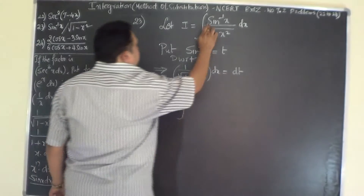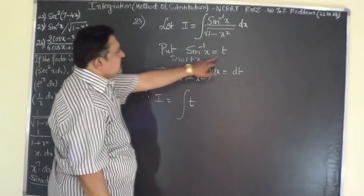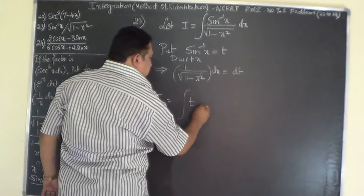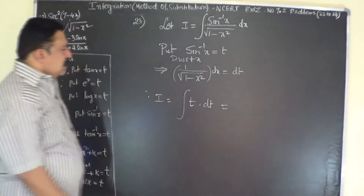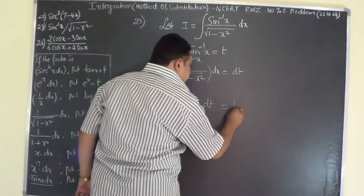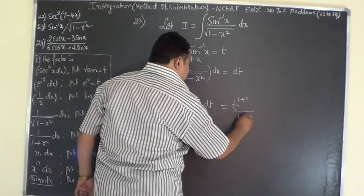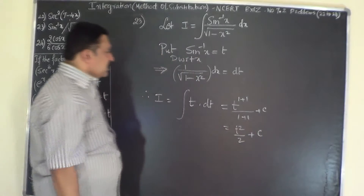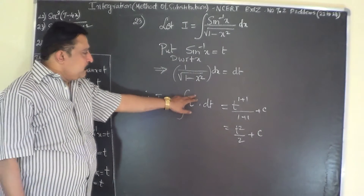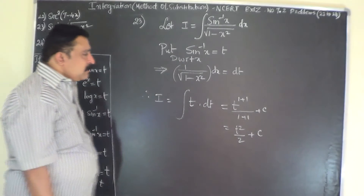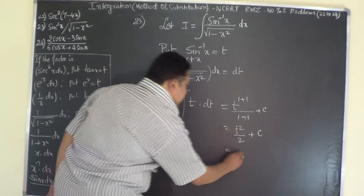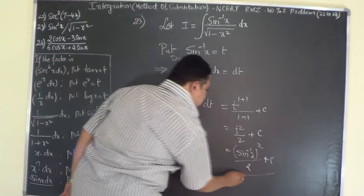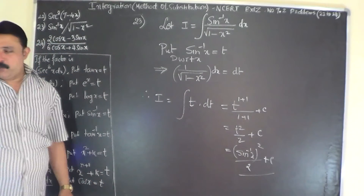I becomes the integral of t dt, since sin⁻¹(x) is replaced by t and dx/√(1 - x²) is dt. Integrating t: I = t^(1+1)/(1+1) + C = t²/2 + C. Substituting back t = sin⁻¹(x), the answer is I = (sin⁻¹(x))² / 2 + C. A very simple problem.